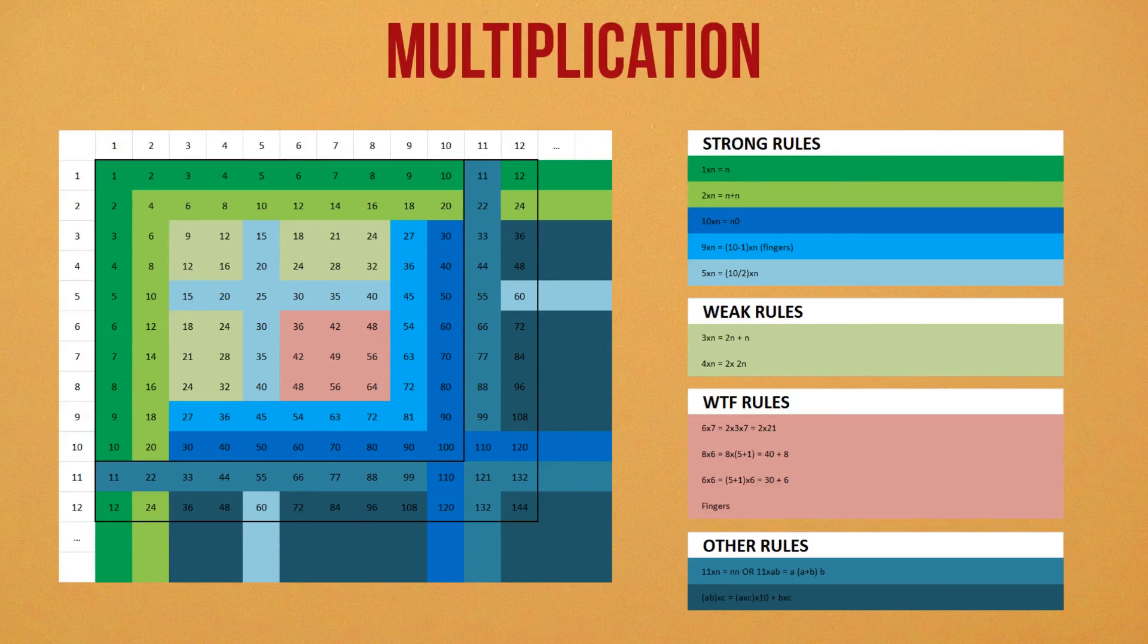Okay, so to summarize: for multiplying one-digit numbers, we've got five strong rules, two weak rules, and a whole bunch of random mnemonic devices to take care of the rest. For multiplying bigger numbers, we can break them down by multiplying one-digit numbers and then adding everything together. I feel the need to apologize here. That was an awful lot of talking for an awfully small number of revelations. Don't worry though, next episode I promise to share a whole bunch of new stuff that you've probably never even heard of.